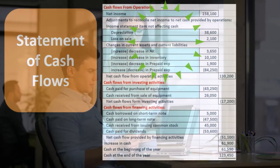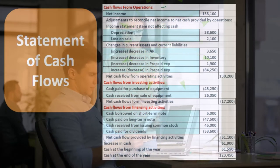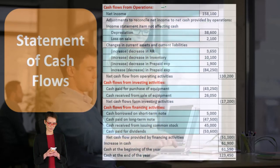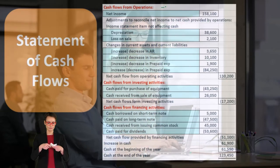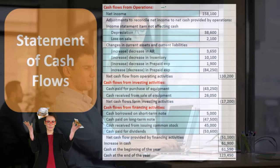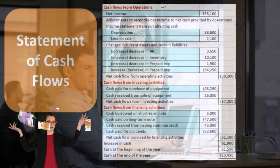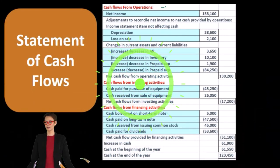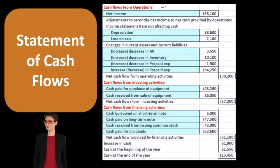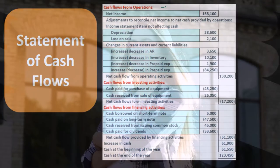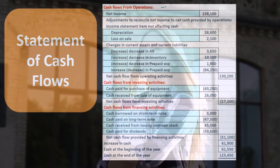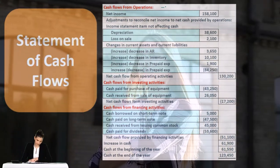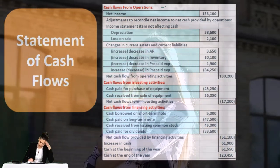Operating activities represent the cash flows from the actual operations of the business, similar to how the income statement reports accrual-basis net income from business activities. It makes sense to think of cash flows from operations by taking the income statement and putting it on a cash basis.